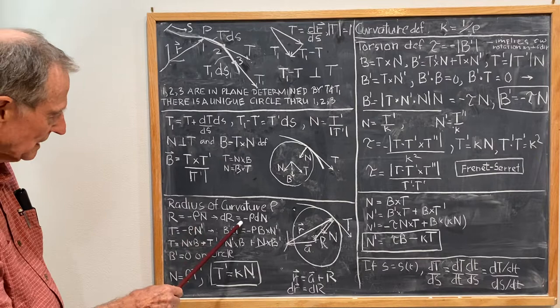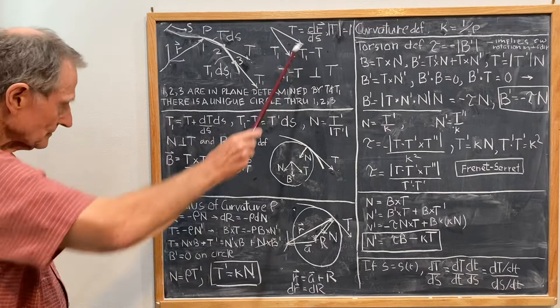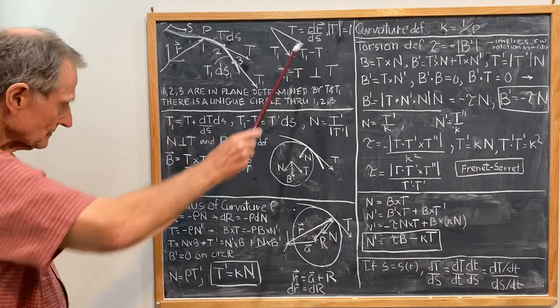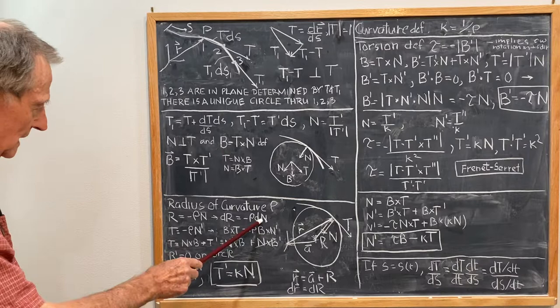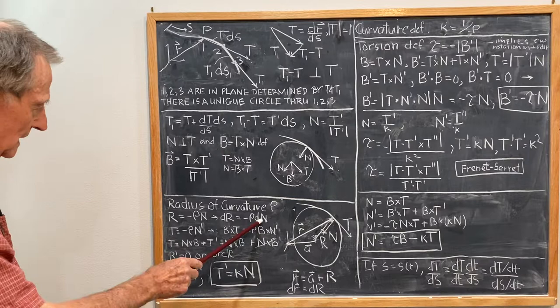So we have now R equal to minus ρN, so that dR is minus ρdN. And if I divide both sides by dS, I get dR/dS, which is T. dR/dS is equal to minus ρdN/dS, so T is equal to minus ρN prime, where dN/dS is N prime.